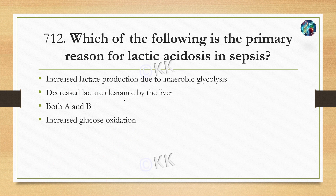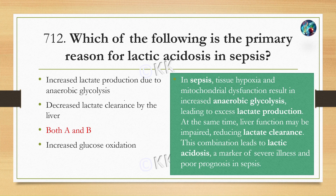Next question: which of the following is the primary reason for lactic acidosis in sepsis? Option A: increased lactate production due to anaerobic glycolysis. Option B: decreased lactate clearance by the liver. Option C: both A and B. Option D: increased glucose oxidation. The correct answer is Option C: both A and B.